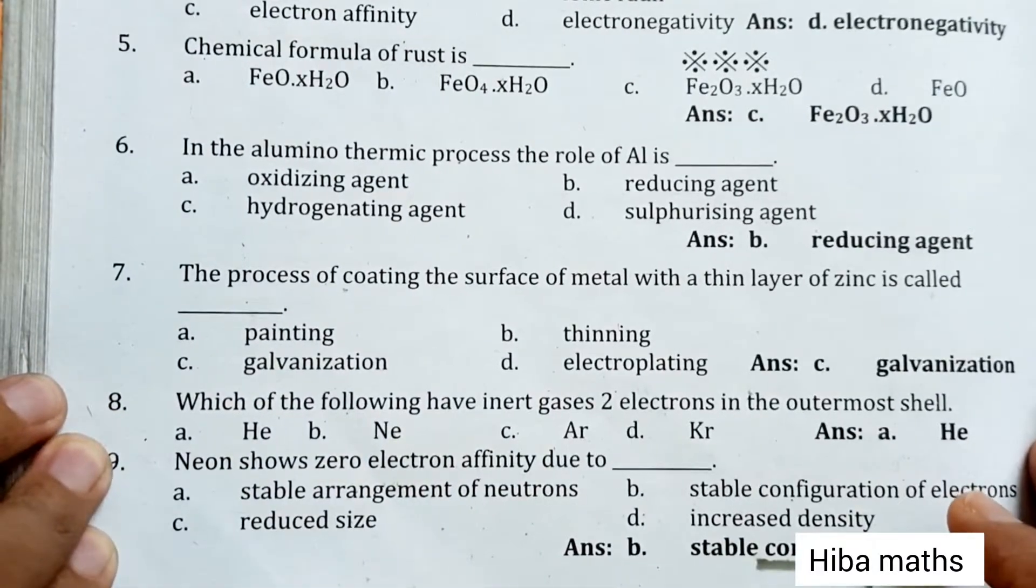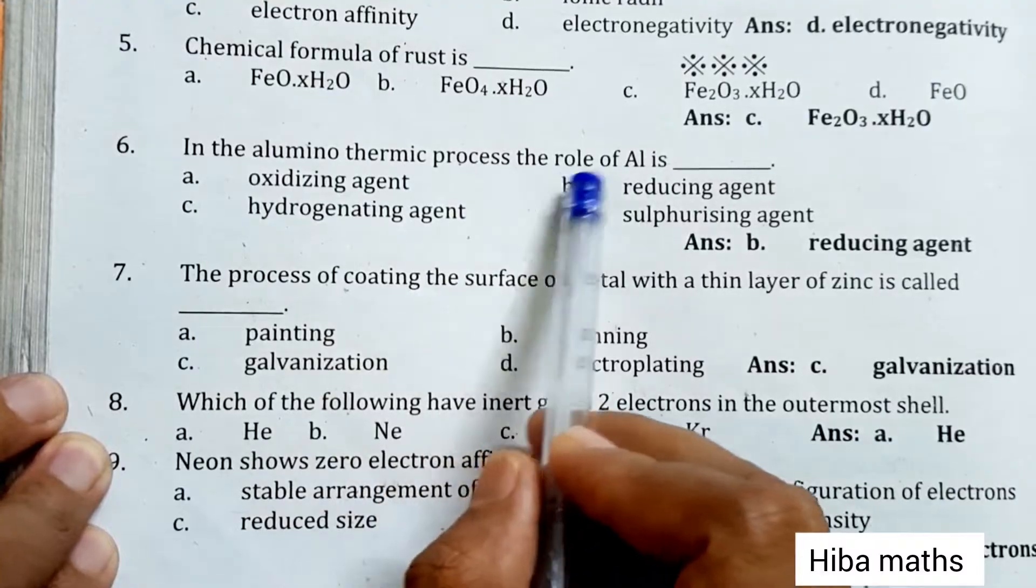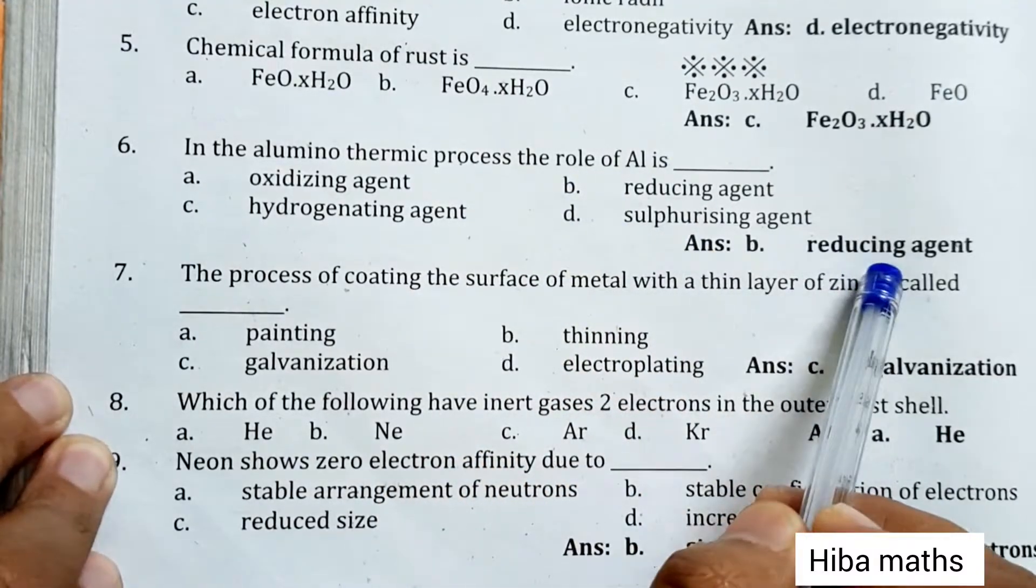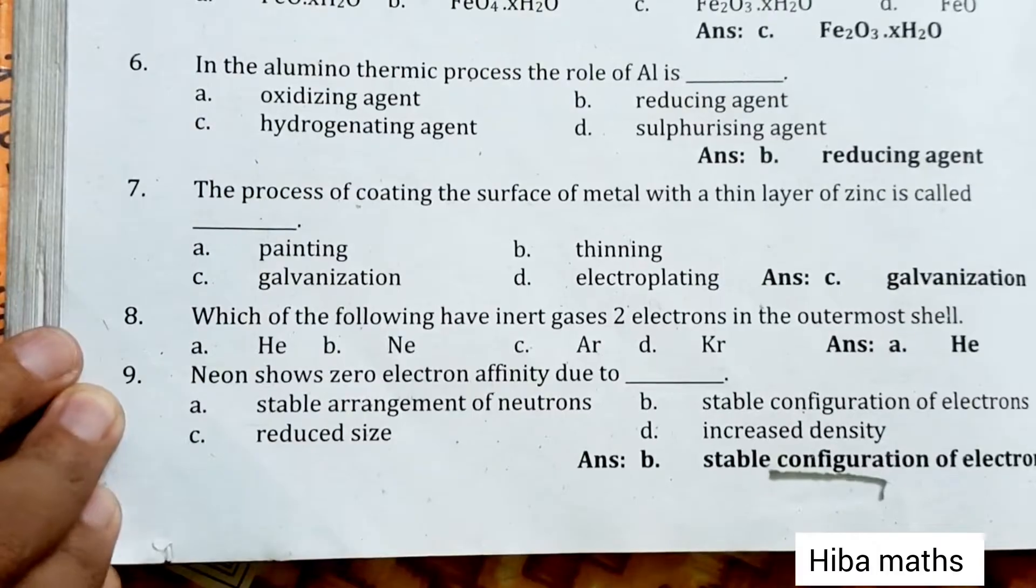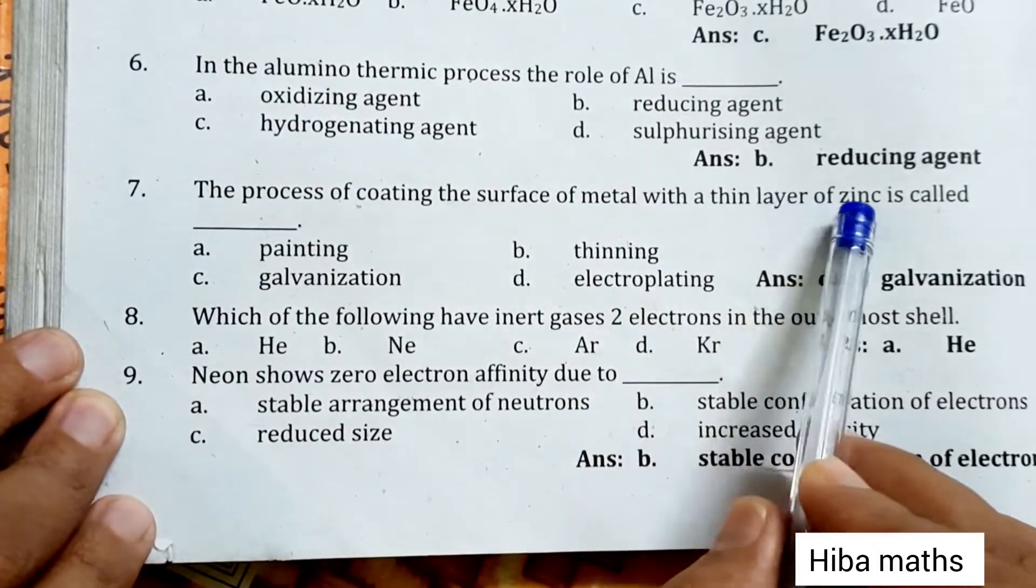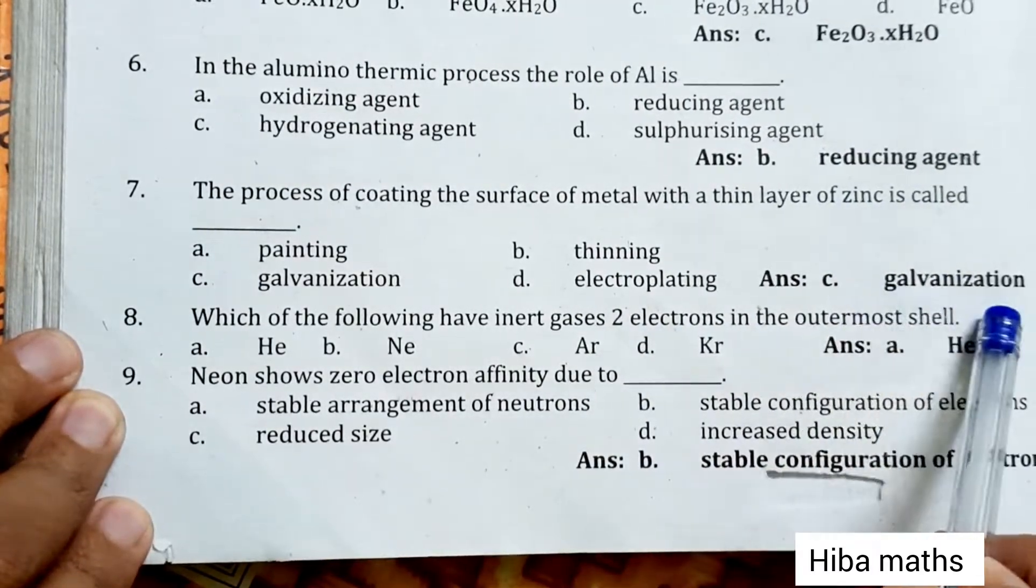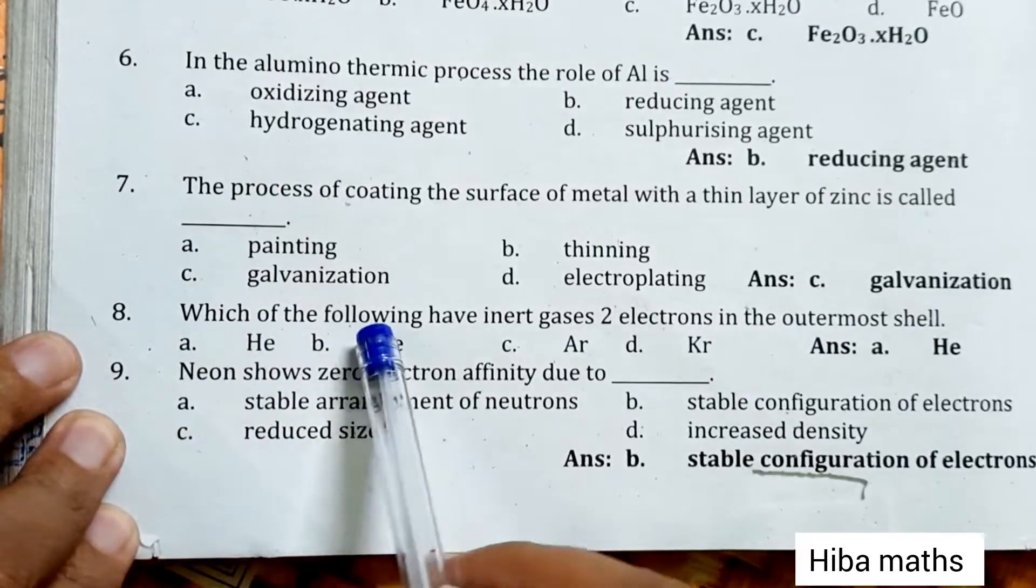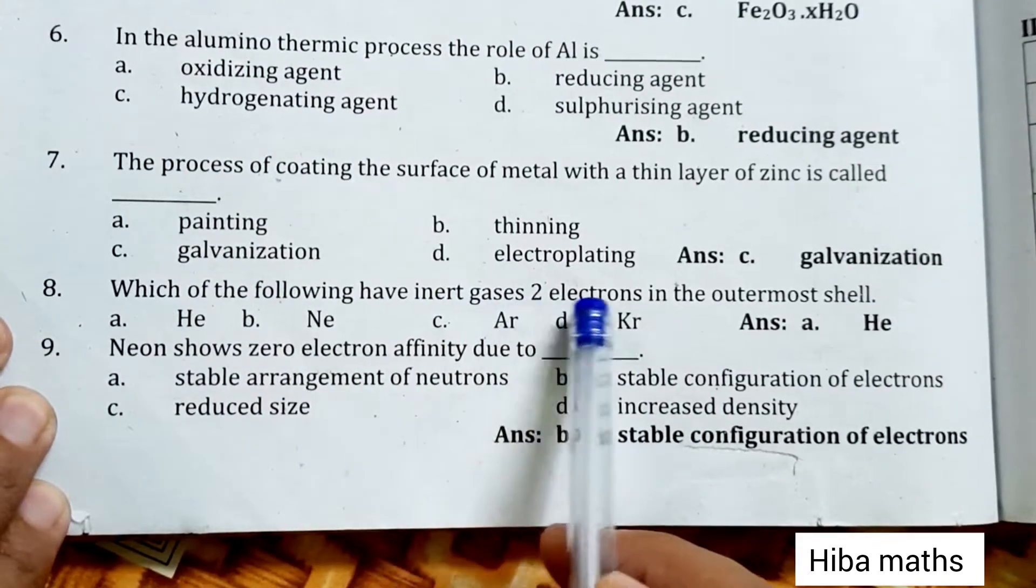In the aluminothermic process, the role of aluminum is reducing agent. The process of coating the surface of a metal with a thin layer of zinc is called galvanization. Which of the following have inert gases two electrons in the outermost shell? Helium.